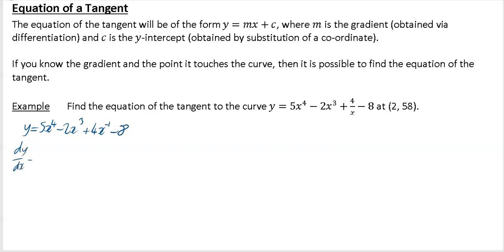So differentiate: dy/dx is going to be 20x cubed minus 6x squared minus 4x to the minus 2. It's fine to use it this way, but I'd probably convert it back — actually, we'll just leave it in index form, it's fine. We'll use our calculator to do this, just to make sure we get it right.